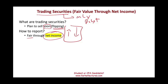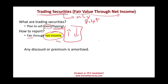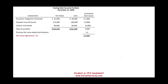Why am I emphasizing this point? In contrast to available for sale securities, which is a different category, adjustments do not go into net income. So for trading securities, it's fair value through net income. Any discount or premium is amortized because it's a bond, and any interest revenue is reported on the income statement. The best way to illustrate the concept of trading securities is to take a look at an example.